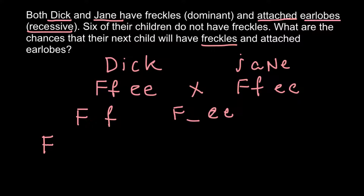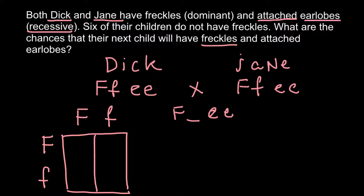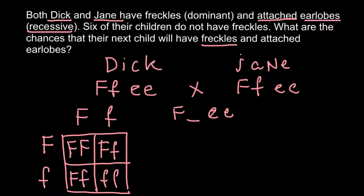Jane also has the same genotype, capital F and small f. When we build the Punnett square, we can find the probability for the children to have or not have freckles. The four outcomes are: capital F capital F, capital F small f, capital F small f, and small f small f. As you can see, three quarters of their children would have freckles.